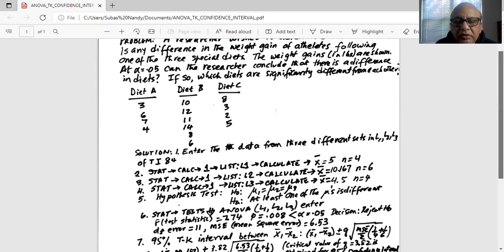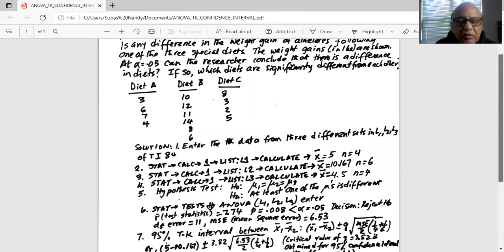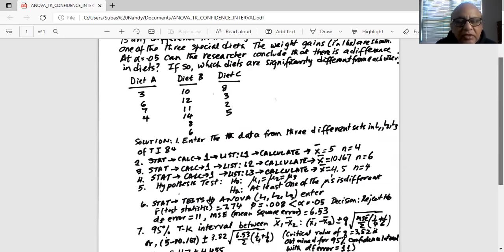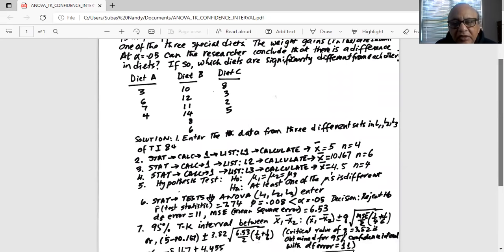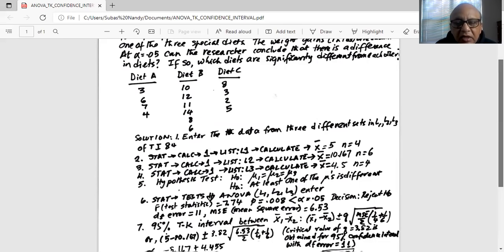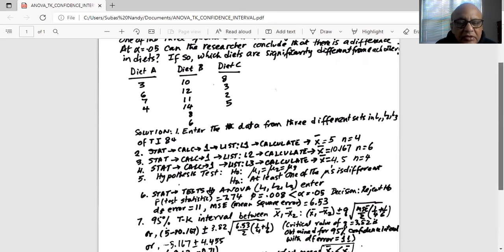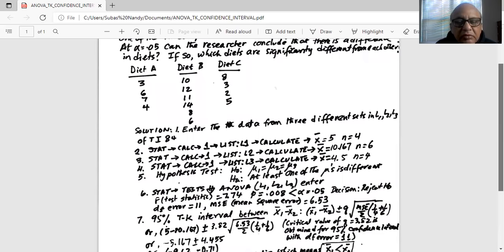We will enter the data from the three different data sets in L1, L2, and L3. Diet A in L1, diet B in L2, diet C in L3. Then we will do stat calc, one list is L1, calculate the sample mean x bar equal to 5, n equal to 4. Repeat the procedure for L2, x bar is 10.167, n equal to 6. And then again for L3, x bar is 4.5, n equal to 4.